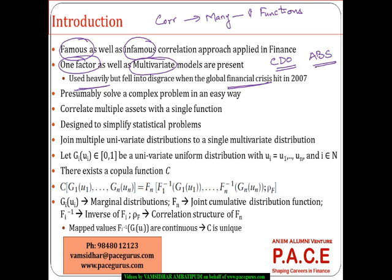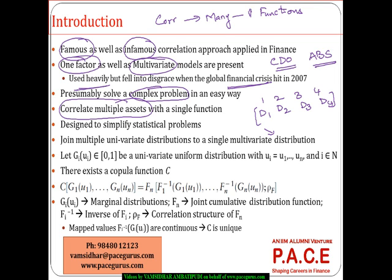On the positive note, it has the advantage that it can solve even a complex problem where we have multiple assets — we can take the correlation between them in a single function. What it typically does is take various univariate distributions — say assets 1, 2, 3, 4, each with their own distribution — and combines all these different univariate distributions into one single multivariate distribution. That is what is being performed by a Copula function.